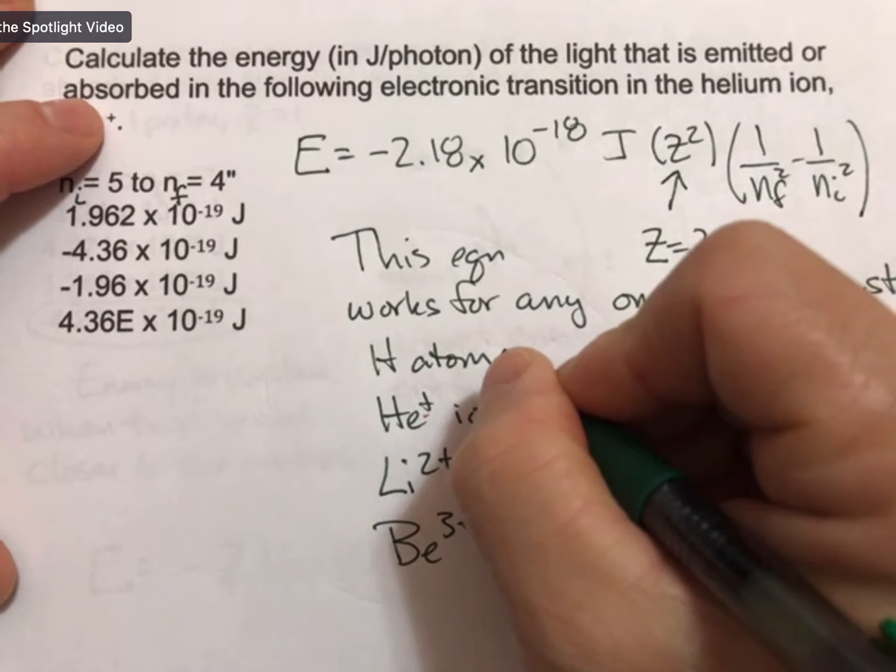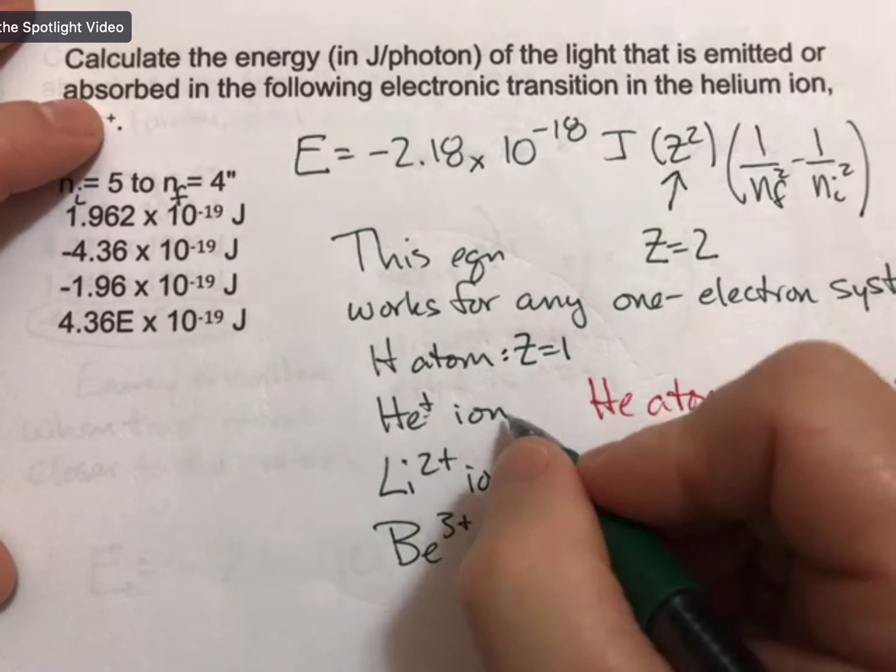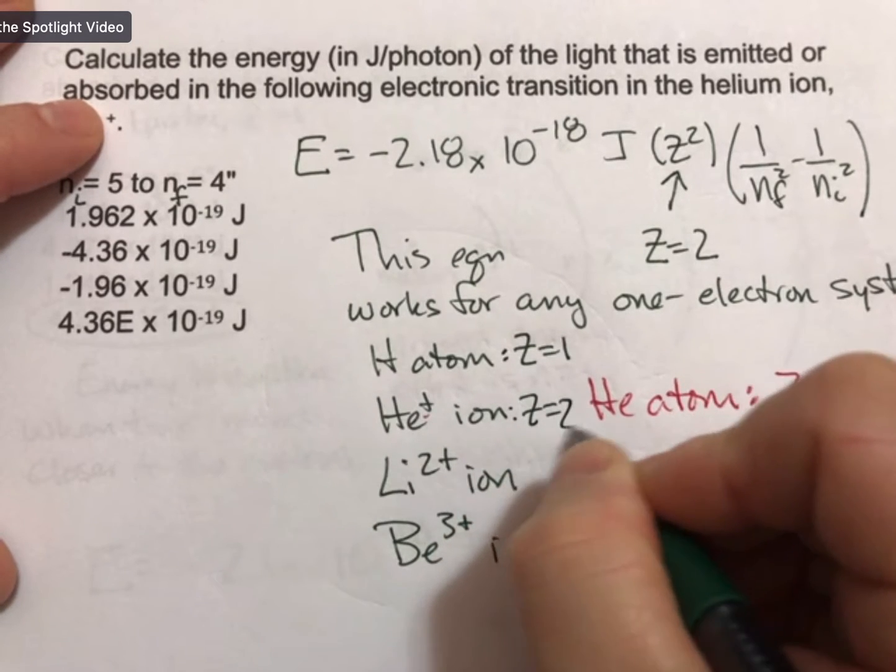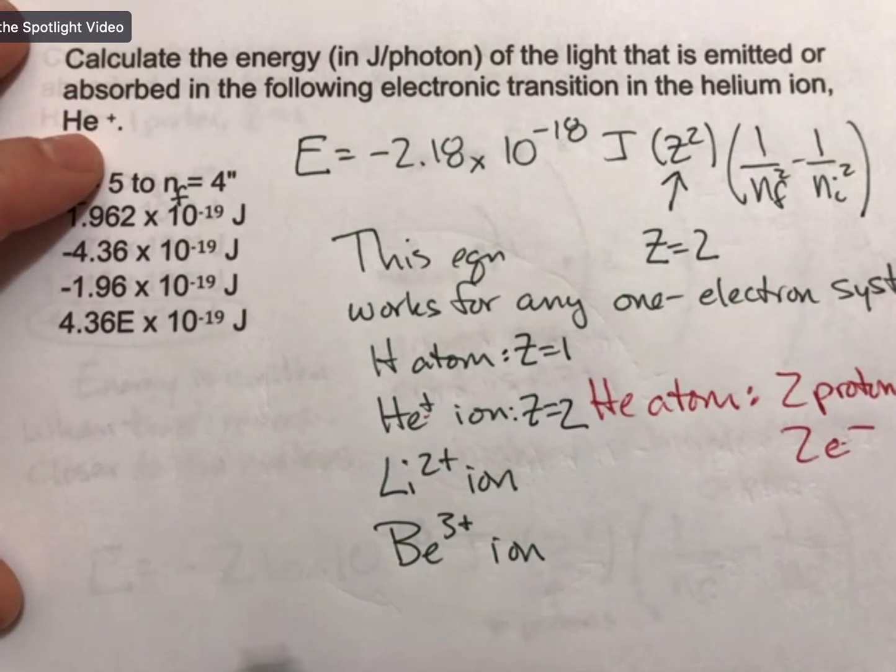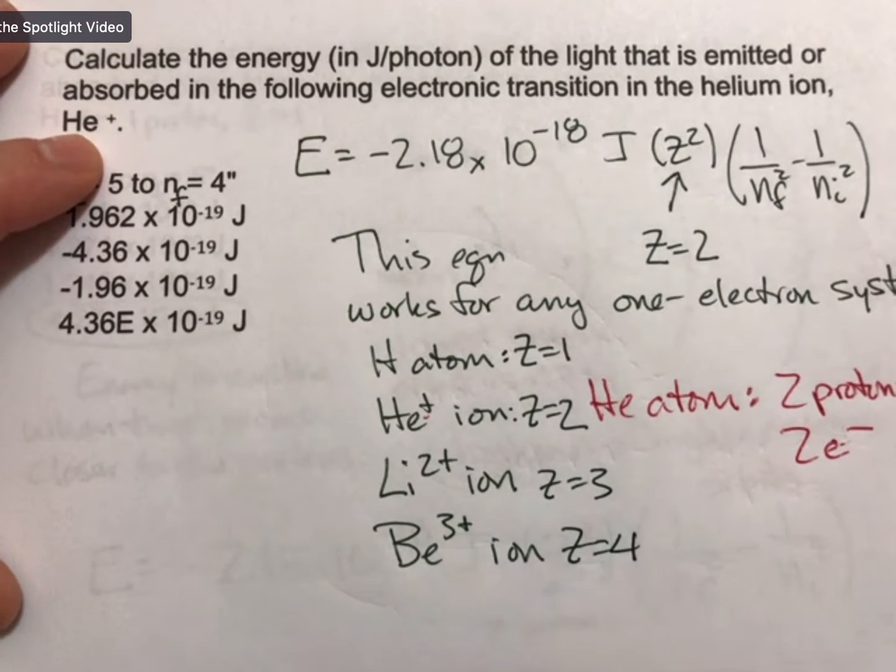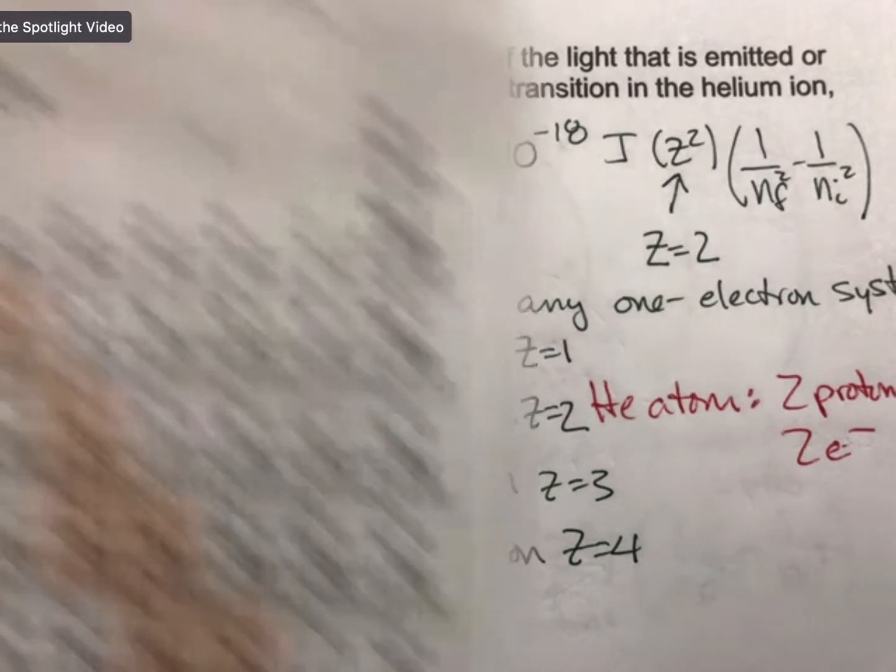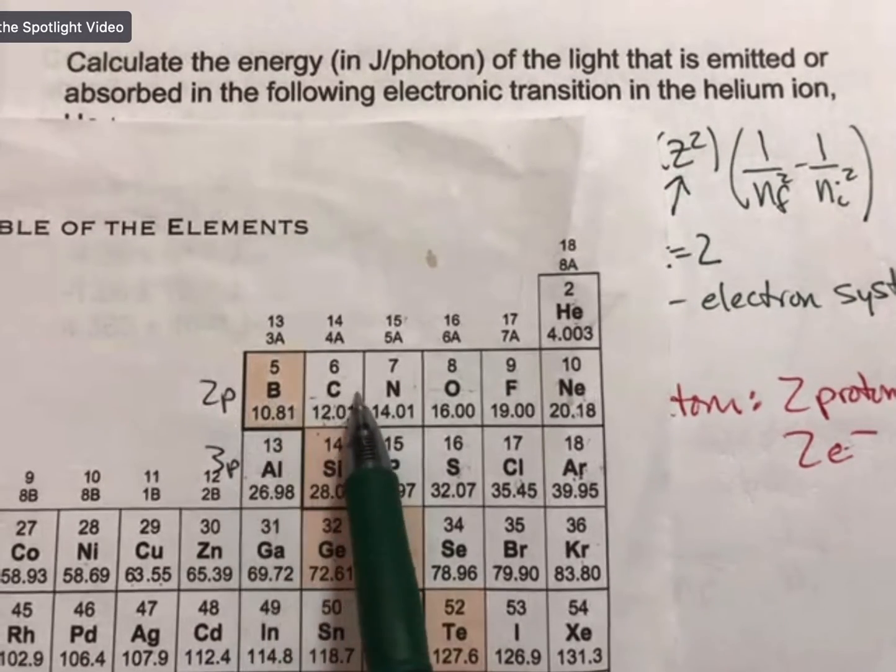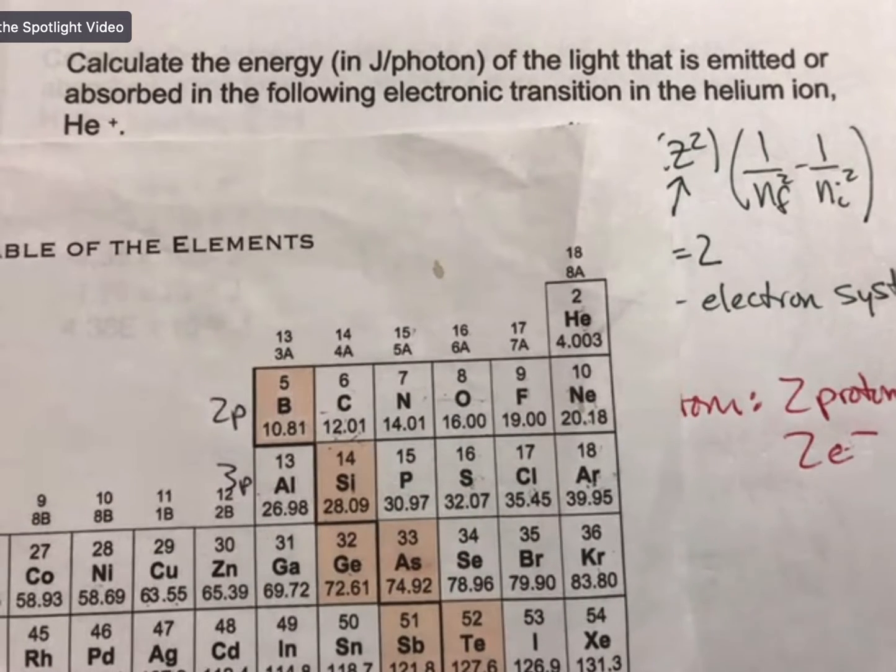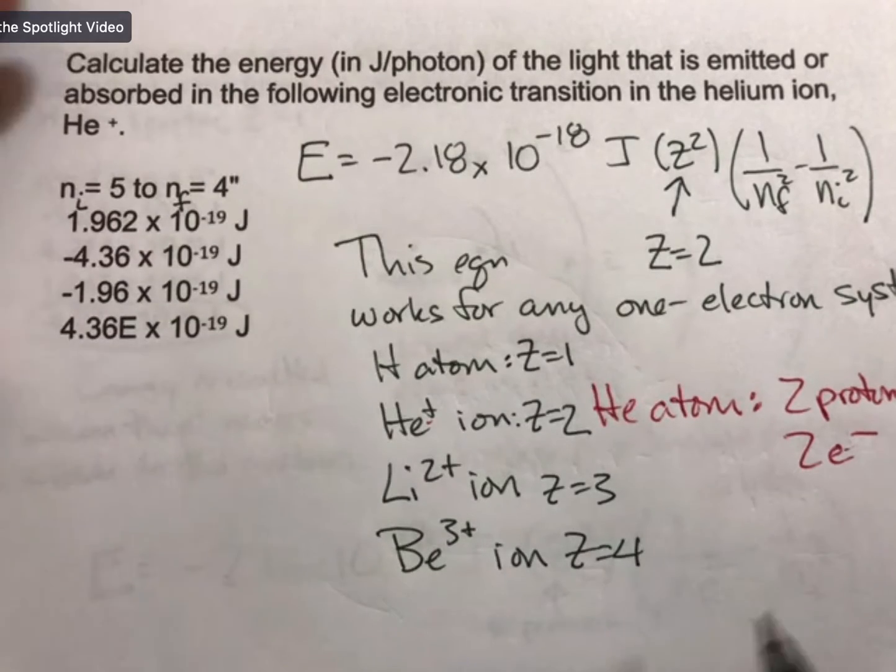And the only thing that's different for all these is that z changes. So z equals 1 for hydrogen, z equals 2, and then z equals 3 for lithium, and z equals 4 for beryllium. And of course, you can go farther, but it gets harder and harder to remove all the electrons. So let me typically stop there.